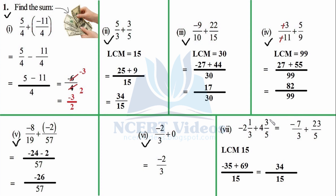Last part of Question 1 involves a mixed fraction. First, convert it to a simple rational number. 3 × 2 = 6, and 6 + 1 = 7, keeping the negative sign: −7/3. Similarly, 4 × 5 = 20, and 20 + 3 = 23, giving 23/5. Now LCM of 3 and 5 is 15. So: (15/3) × (−7) = −35, plus (15/5) × 23 = 69. Different signs — the greater value is positive, so subtract: 69 − 35 = 34. Answer: 34/15.